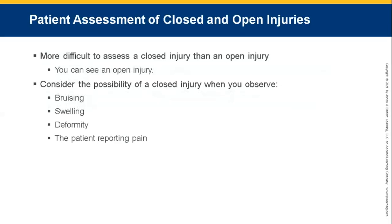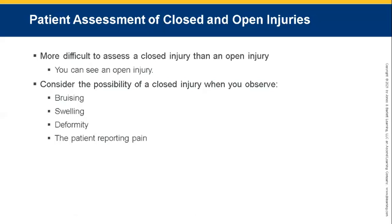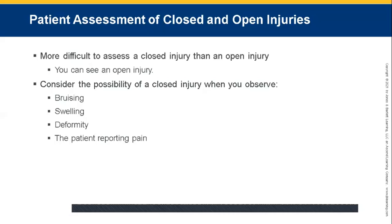Now let's look at patient assessment of closed and open injuries. Closed injuries are more difficult to assess than open injuries since you can see an open injury. Consider the possibility of a closed injury when you observe bruising, swelling, deformity, and the patient reports pain. Pay attention to where the bruising is located — bruising to the head involves the cranial cavity, bruising to the chest involves the thoracic cavity, and bruising to the abdomen involves the abdominal cavity. Think about the size of the cavity and how much blood can bleed into it.